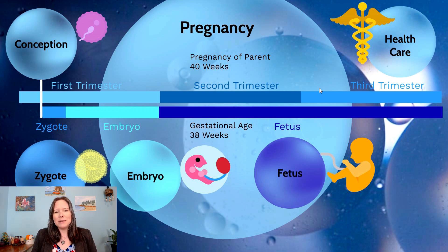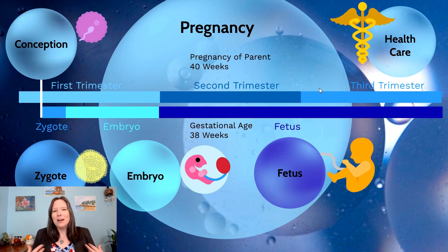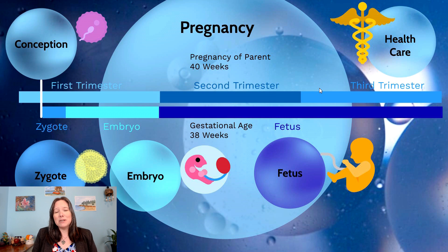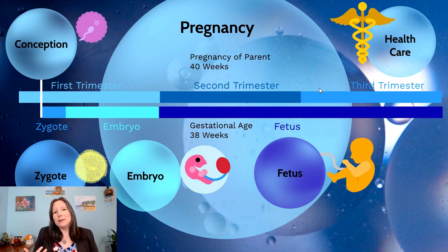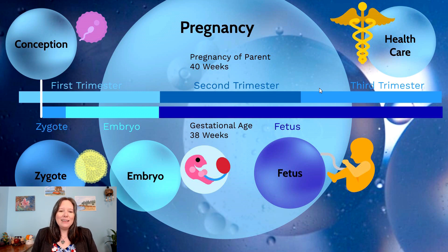The trimesters characterize what the parent is experiencing on the outside. In the first trimester, there may be a lot of nausea and fatigue. The second trimester, things might be good with a lot of energy. And in the third trimester, fatigue and back aches start to come back. That makes sense from the parent's point of view.